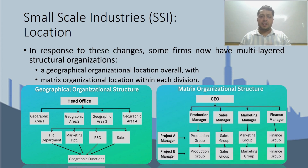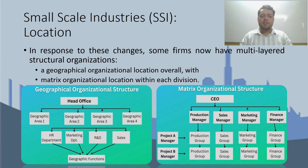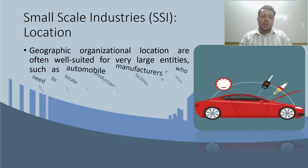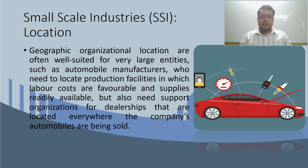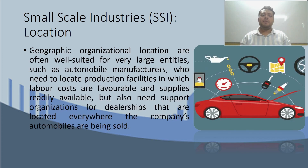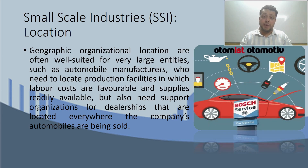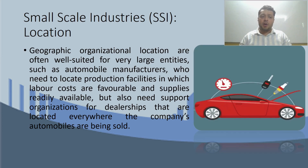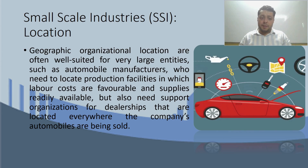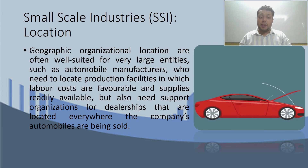In response to these changes, firms have made their organizational structure multi-layered — overall they use geographic organizational location, while each division uses matrix organizational location within the organization. Geographic organizational location is generally more suitable for large companies, such as automobile manufacturers who need to locate their production facility where labor costs are low — meaning cheap labor is available — and raw material supply can easily reach them, but they also need support organizations like dealerships in every place where the company wants to sell its automobiles.